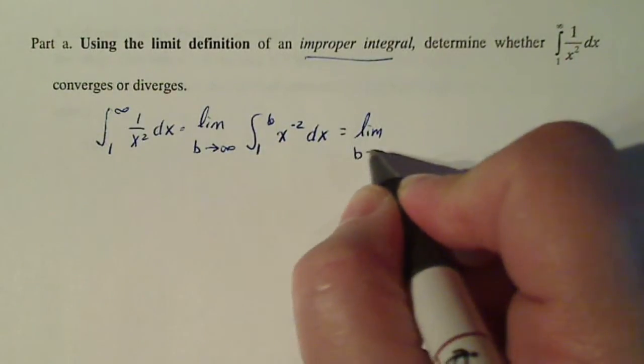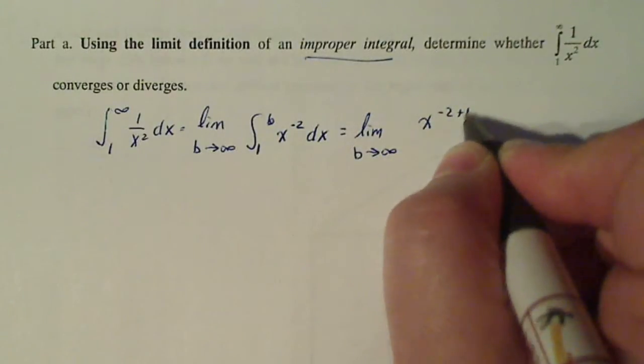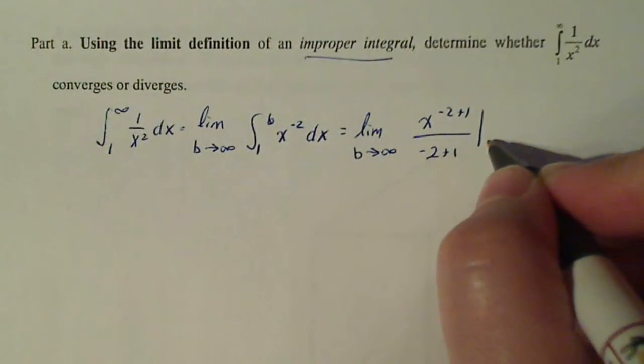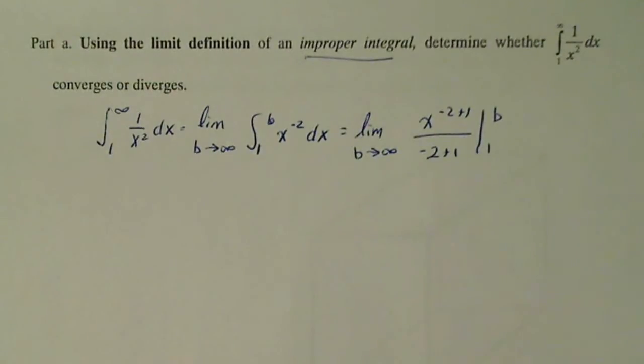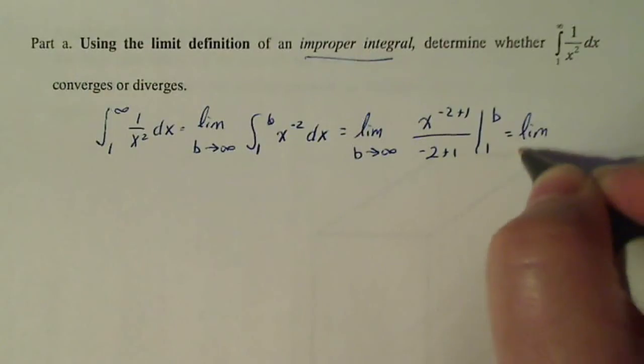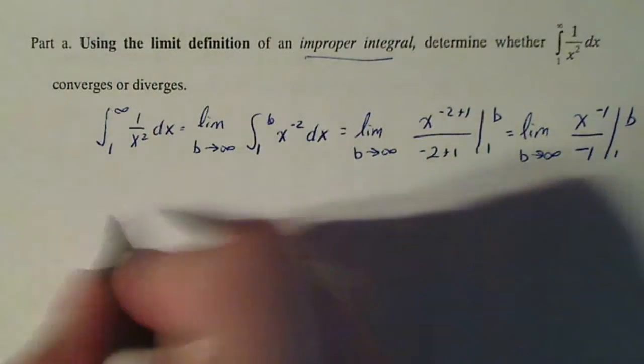So the limit as b goes to infinity of x to the minus two plus one over minus two plus one. Now, the reason why I'm doing that from one to b is because, you know, don't make mistakes. Equals limit as b goes to infinity of x to the minus one over minus one from one to b. I'm going to keep going down here.